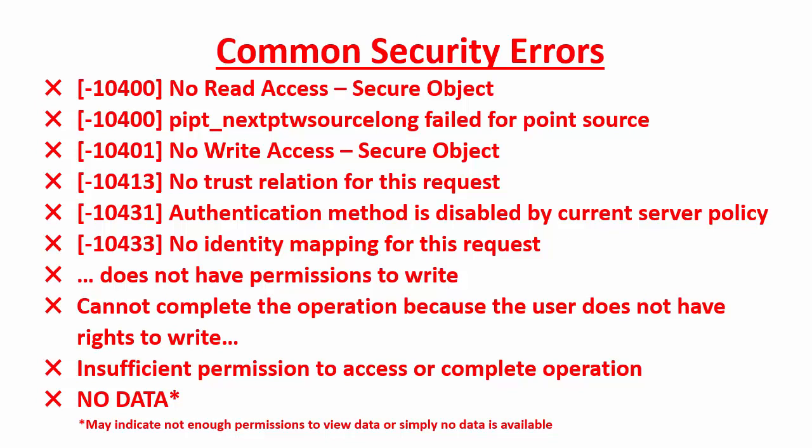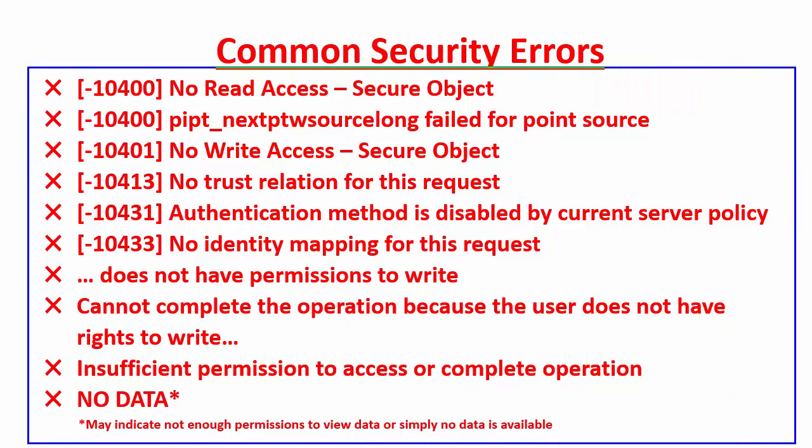In the previous video we learned how to recognize common security errors. We also saw that as a user we can successfully test if we can connect to the data archive, and we can see specifically how we are authenticating. In this video we will step through, as a PI System Administrator, how to check the authentication for all the different connections to the PI Data Archive.